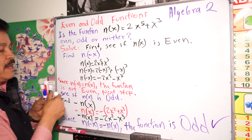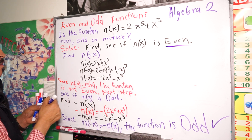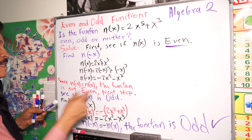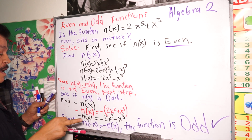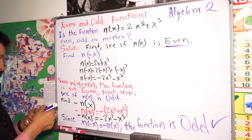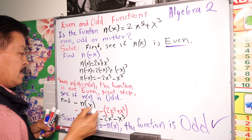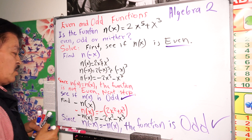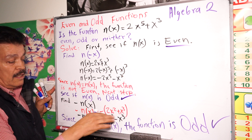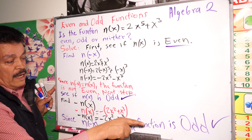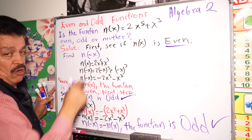So the process is: first step, check if the function is even or not. In this case it's not even. Next step, see if n(x) is odd. We find negative n(x) and develop the whole process. Our conclusion was that the function n(x) is odd.